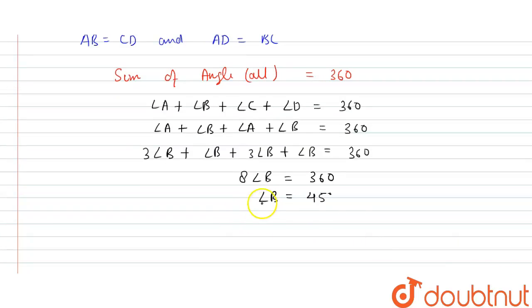So angle B is 45 degrees. That means angle A is three times angle B, so angle A is 3 times 45, which will be equal to 135 degrees. And we can say angle D is also 45 degrees, and angle C is also 135 degrees.